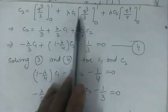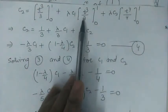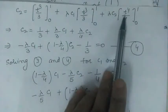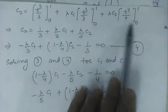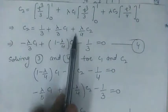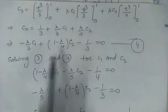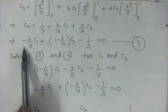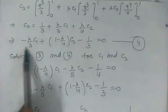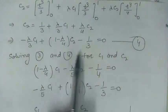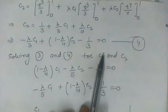Continuing: λc₁ times [t³/3]₀¹ plus the integral of t⁴ which is [t⁴/4]₀¹. Substituting the limits and shifting all terms to the left-hand side gives equation 4: −(λ/3)c₁ + (1 − λ/4)c₂ − 1/3 = 0.